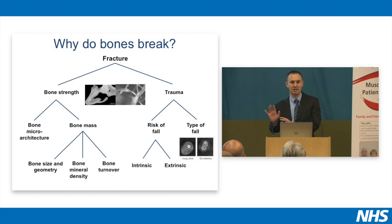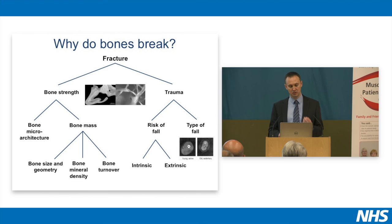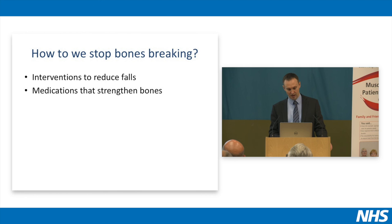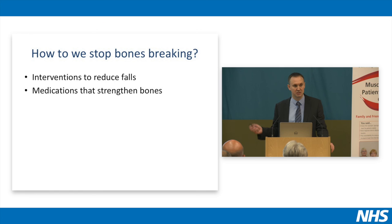Younger people tend to fall forwards, put out their arm, and potentially are at risk of a wrist fracture. In later life, falls change a little bit — some people will fall sideways or backwards and not be able to get their hand out, and therefore may be more at risk of hip fractures. So the type of fall also makes a difference. Bearing in mind that the two main factors are bone strength and the forces applied to it, the two main things we can do are put in interventions to reduce falls, and do things to try and improve bone strength.